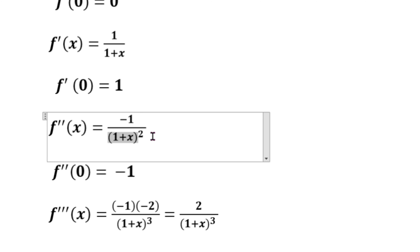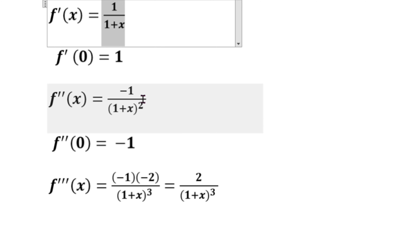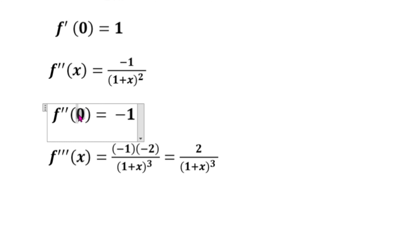Next, f double dash of x: the derivative of 1 by x is minus 1 by x squared, so here it becomes minus 1 by 1 plus x whole squared. Now f double dash of 0 equals minus 1 by 1 plus 0 whole squared.